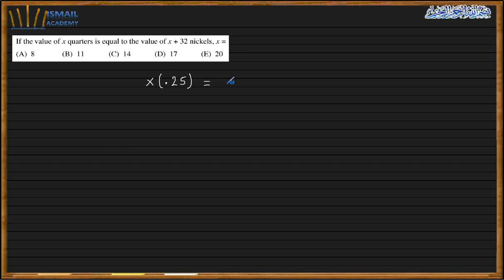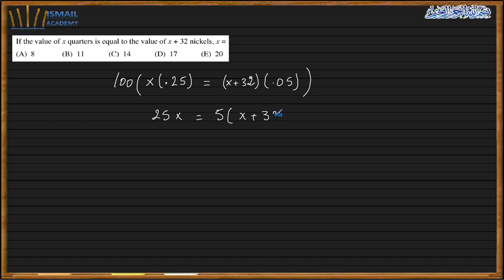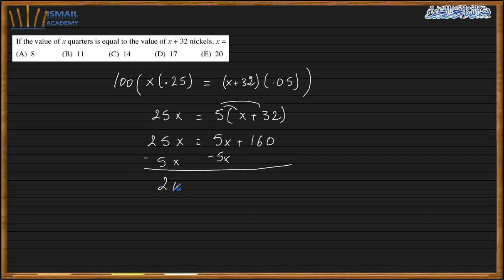The equation becomes 0.25x equals 0.05 times (x plus 32). Multiplying both sides by 100 to eliminate decimals, we get 25x equals 5 times (x plus 32). Distributing the 5 gives 25x equals 5x plus 160. Subtracting 5x from both sides: 20x equals 160, so x equals 8. A is my choice.